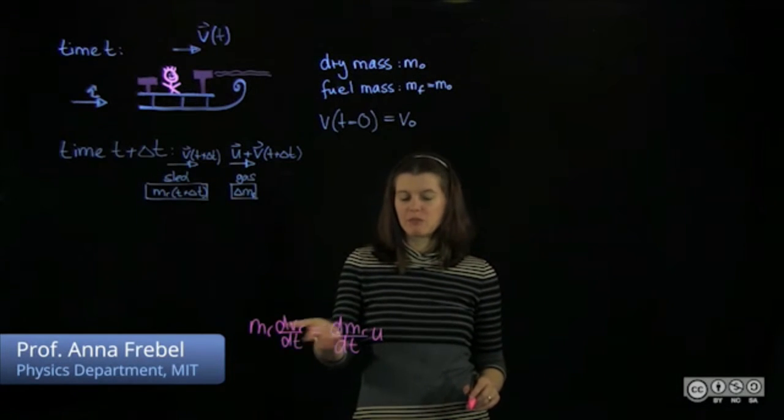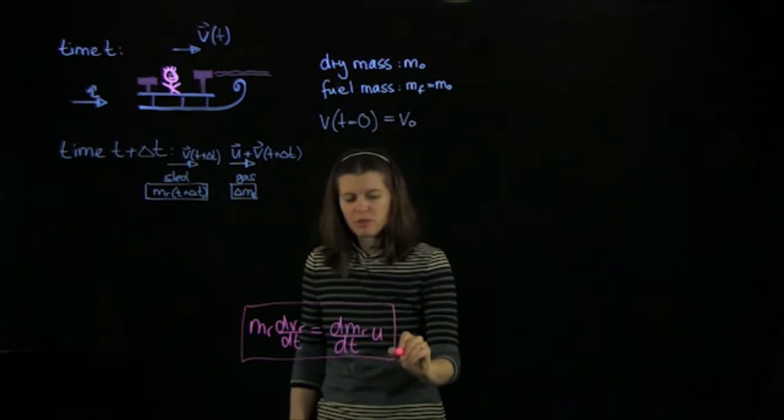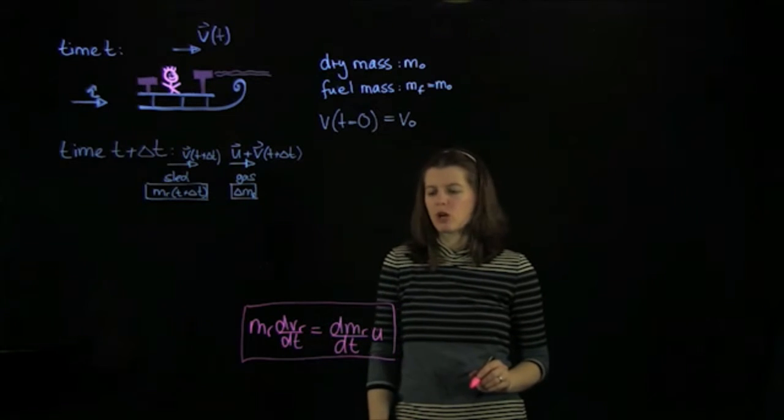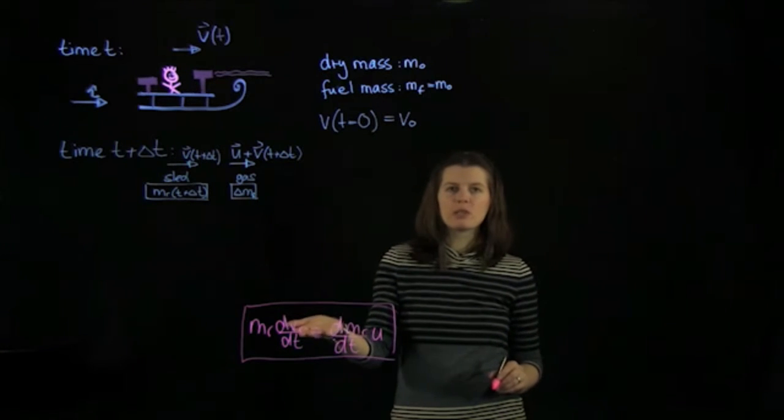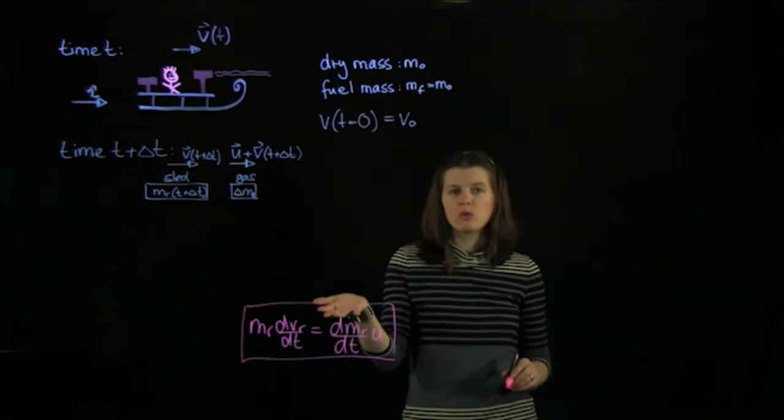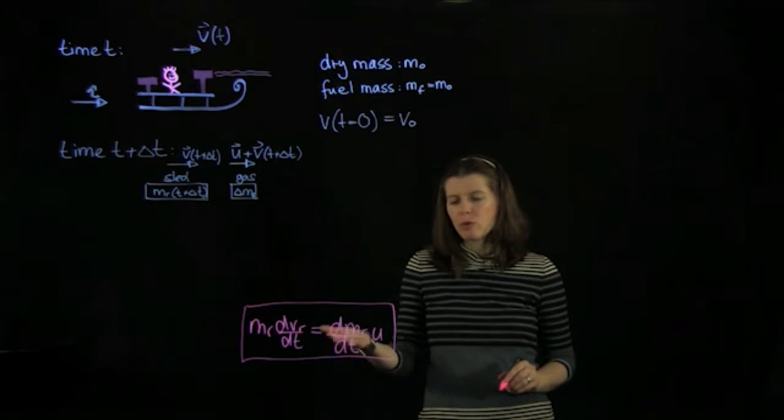We just derived this relation here, the relation between the differential of the speed of the rocket sled and the differential of the mass of the rocket. And we want to ultimately get the speed of the rocket. So we have to apply a technique called separation of variables. And then we want to integrate.